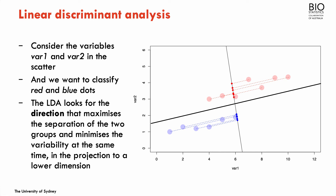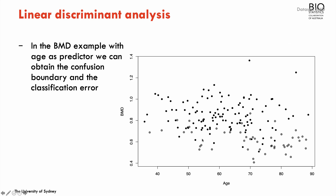Any combination of VAR1 and VAR2 in one region would be classified as red, and a combination in the other region would be classified as blue. In the bone mineral density example, using BMD and age to classify fracture, we do the same exercise — finding the direction that maximizes separation between the two groups while minimizing the variance of the projection in a lower dimension.